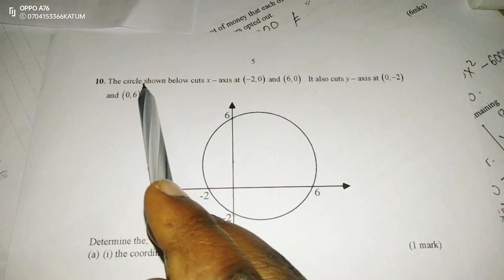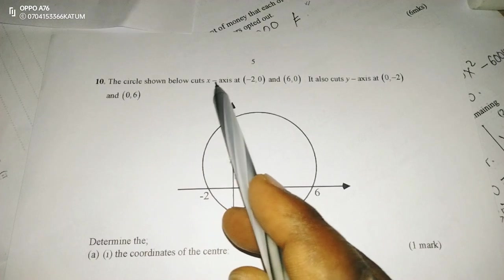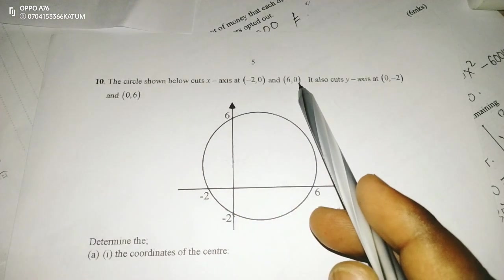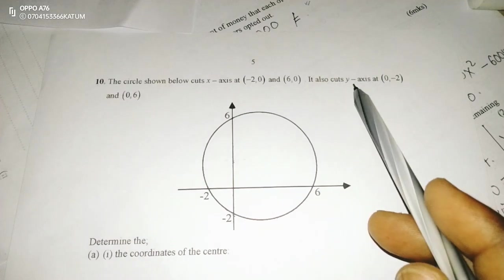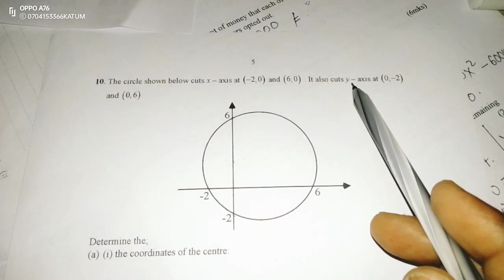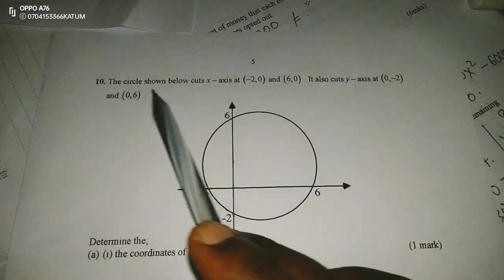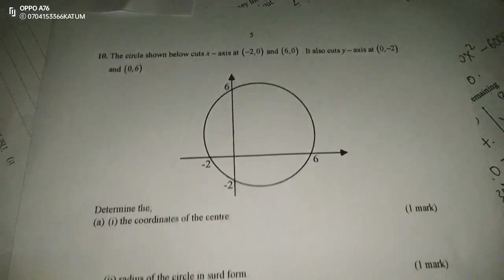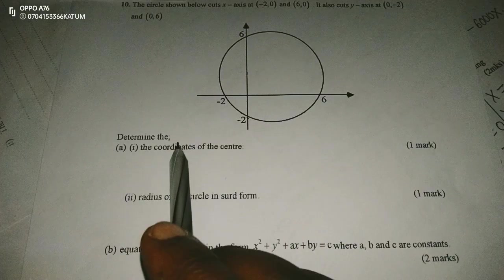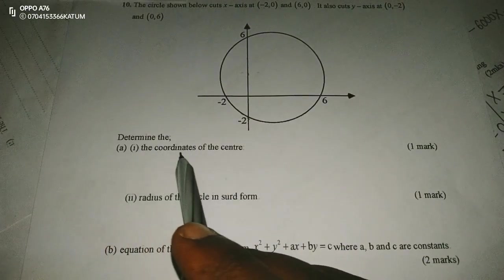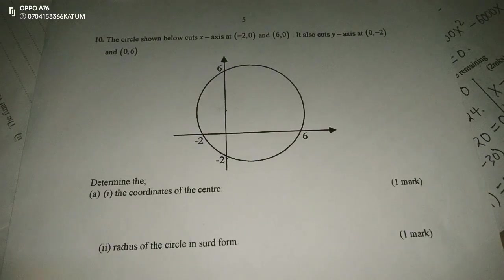We are told that the circle shown below cuts the x-axis at (-2, 0) and (6, 0). It also cuts the y-axis at (0, -2) and (0, 6). Then we are told to determine part 1, the coordinates of the center of the circle.